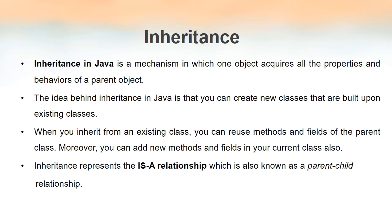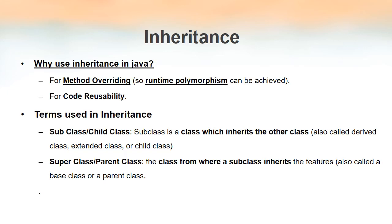Why do we use inheritance in Java? Inheritance is mainly used for two things. One is method overriding, which is also known as runtime polymorphism. The second is code reusability. Code reusability means we can use the same code any number of times, and that is possible because of inheritance.